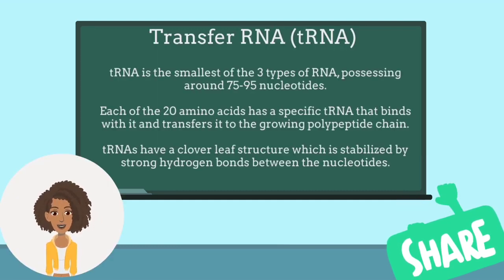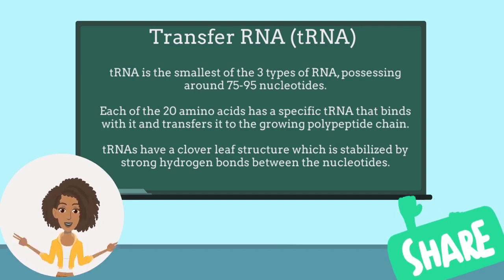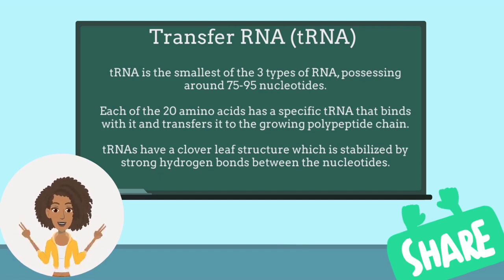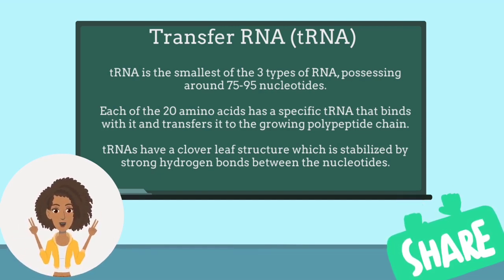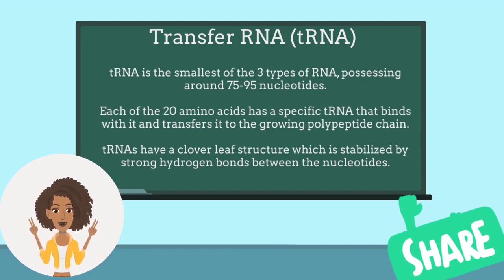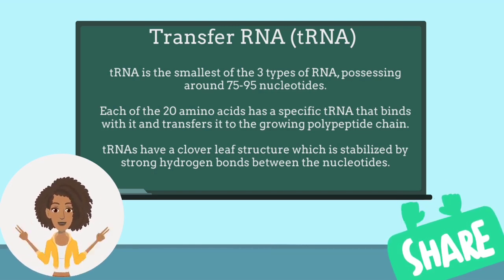Transfer RNA, tRNA, is the smallest of the three types of RNA, consisting of around 75 to 95 nucleotides. tRNAs are essential components in translation, where their main function is to transfer amino acids during protein synthesis. Therefore, they are called transfer RNAs.